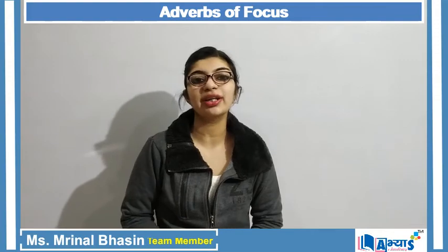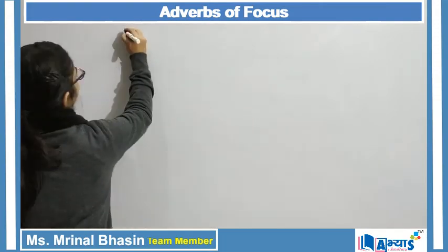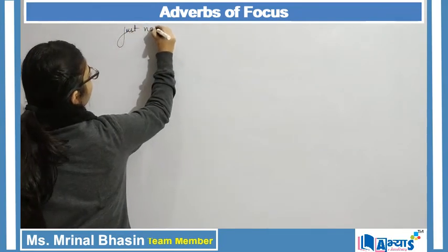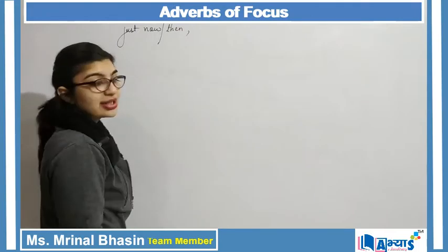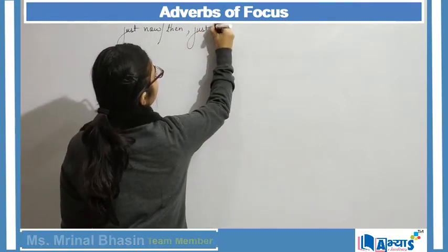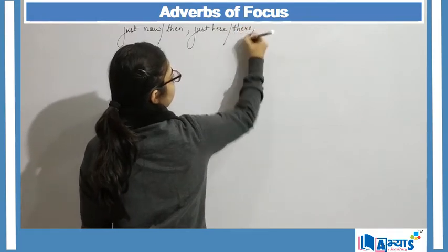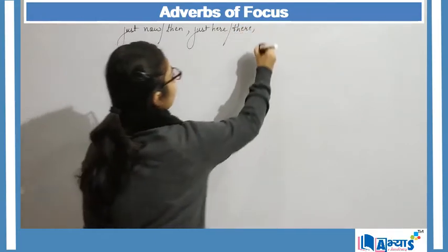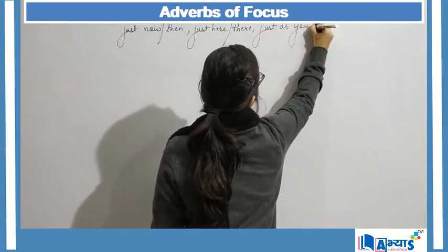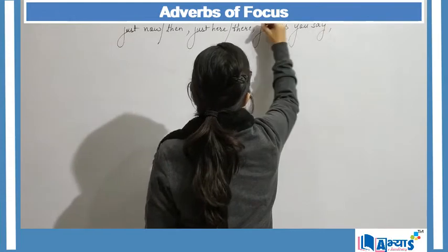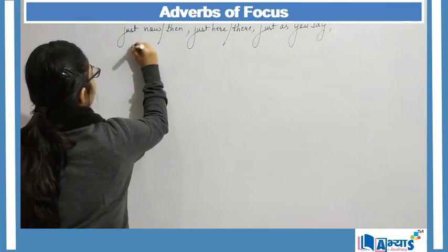There are many phrases which contain 'just' in them. Examples include: just now, just then, just here, just there, just as you say. 'Just' is also combined with 'only' to form the phrase 'only just'.